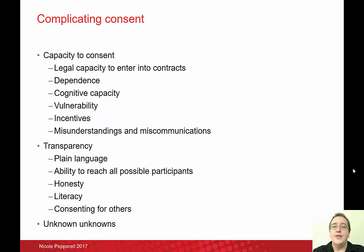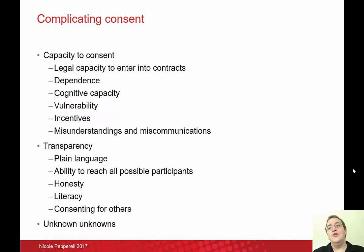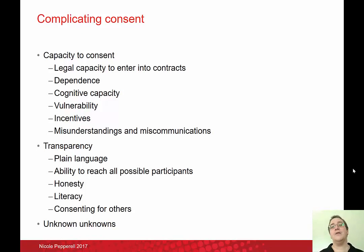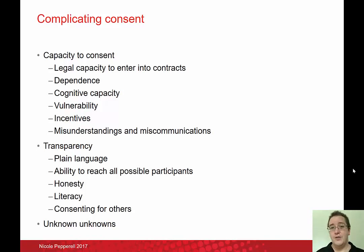Honesty is an interesting issue. In general, if you're asking people to consent, you're meant to tell them what's going on so they can assess the risks. But some research is not possible to do if people understand what it's for — for example, if you're trying to figure out what people do when unobserved or testing honesty. So-called duplicitous research is not banned, but it requires very careful consideration because you're asking people to take risks they don't know they're taking, and you need to justify the benefits of the research carefully.